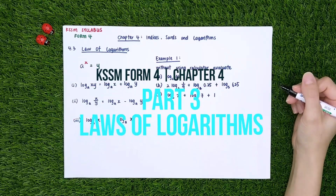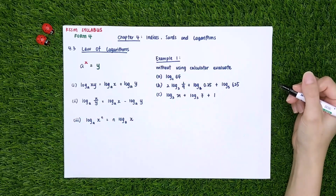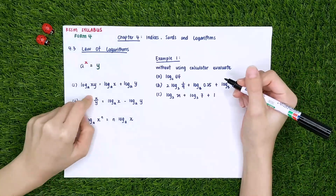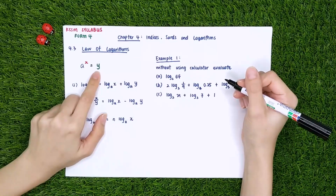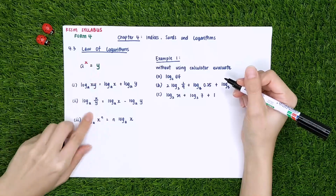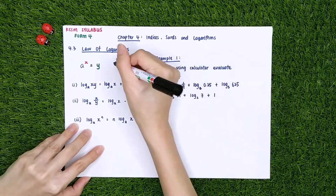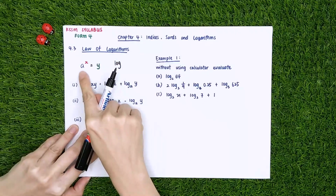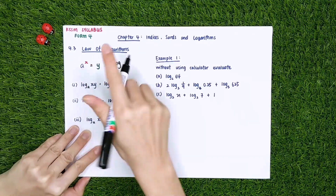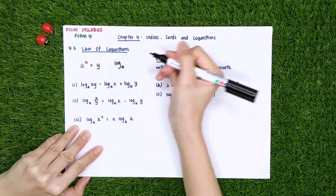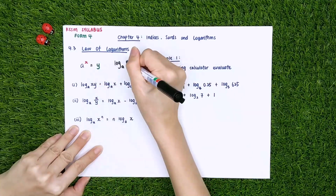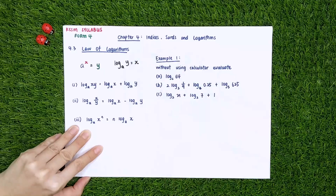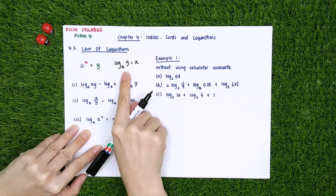This is the third sub-topic of this chapter: law of logarithm. If a power of x equals y, you need to know how to convert index form into logarithm form. It will look like log base a of y, where a is the base and x is the index. The answer equals the index, and this is the logarithm form.